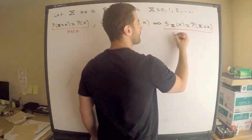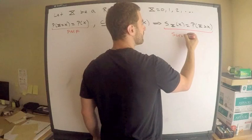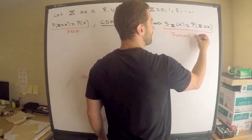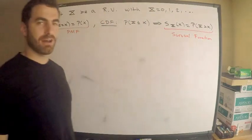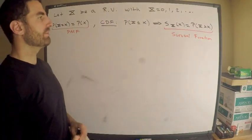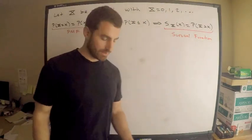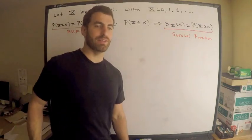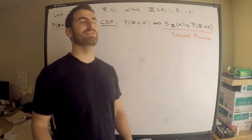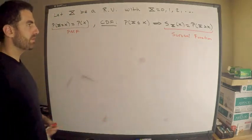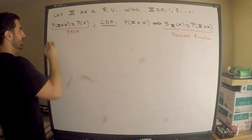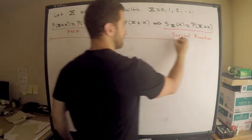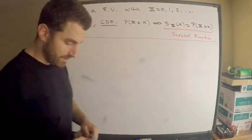The survival function is just the 1 minus the CDF. It's just the complement of the CDF. That's all it is. So this is the survival function. And I want to show that the expected value is equivalent to summing up the values of the survival function. So here we go. Let's keep myself in space.